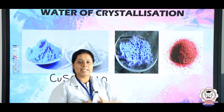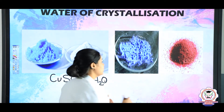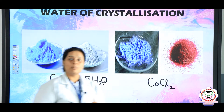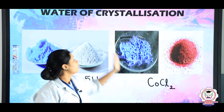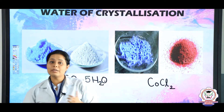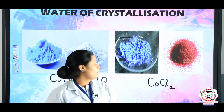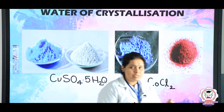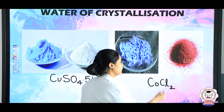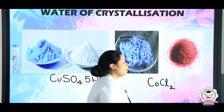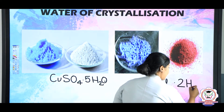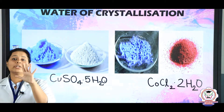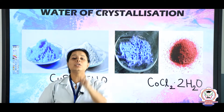Let us look at one more example. I am taking a salt called cobalt chloride. You can see that both colours are different. The first one is blue in colour and the name is anhydrous cobalt chloride. If you add a little water, it will become pinkish in colour and is called cobalt chloride with two molecules of H2O. So in copper sulphate there are five molecules of water and in cobalt chloride there are two molecules of water.